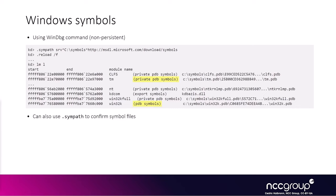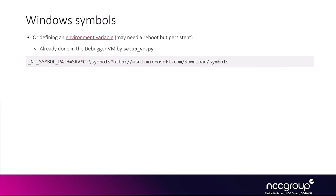The last thing to cover is enabling symbols. Without symbols, you won't have any information about structures or the actual functions being called when debugging Windows binaries. You can set them manually in WinDBG using the sympath command — it won't be persistent, but works right away, and you can see changes after using the reload command. The best method is to define an environment variable so it persists across reboots. This has already been done by the installer scripts, so you don't have to do it yourself.